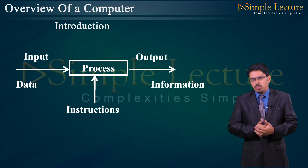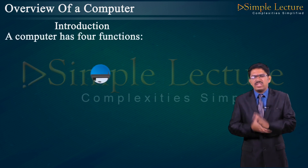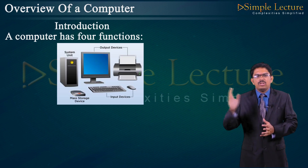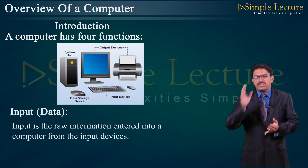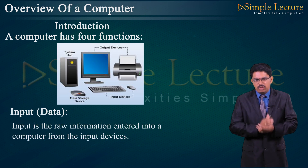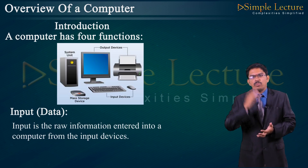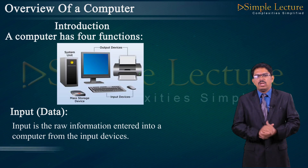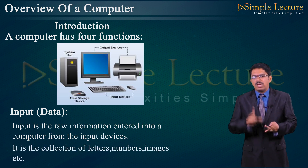Now let's go through the basic functions of a computer. The first function is input. Input is the raw information entered into a computer from the input devices. It is a collection of letters, numbers, images, etc.